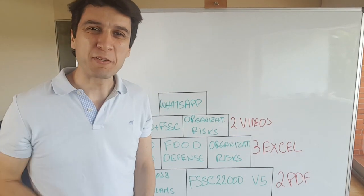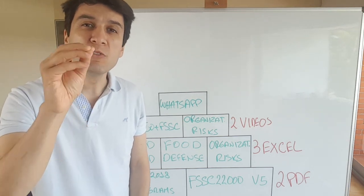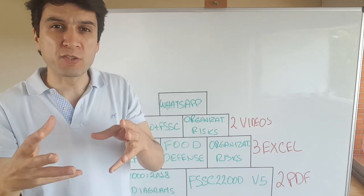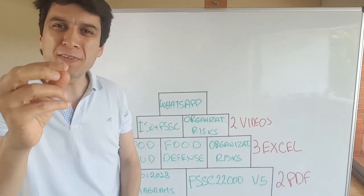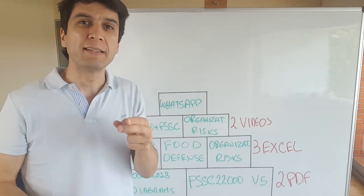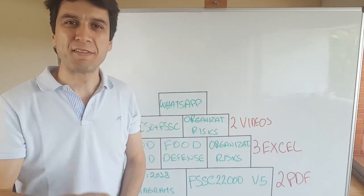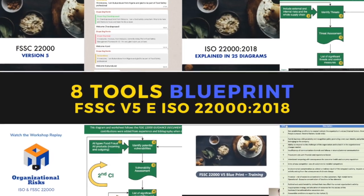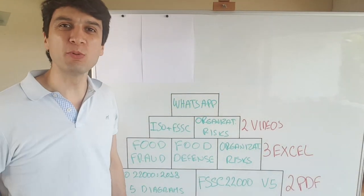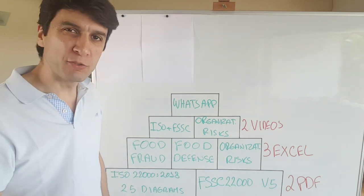Hi everyone! Hi food safety professionals! As the FSSC and ISO 22000 new versions are this month celebrating 1 and 2 years old, I thought this was the perfect time to come here and share with you the 8 tools that will save you time, that will help you improve, develop or upgrade your food safety management system. These are the 8 tools you can find inside the ISO and FSSC blueprint. I will explain them briefly to you.